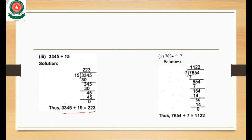Next, part 4: 7854 divided by 7. We place 7854 inside the bracket and 7 outside. Since the divisor has only one digit, we take one digit at a time. 7 times 1 is 7, so 7 minus 7 equals 0.